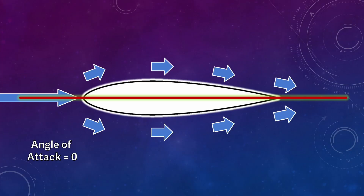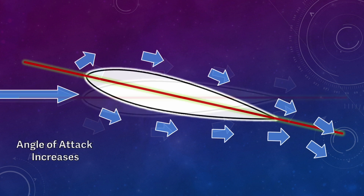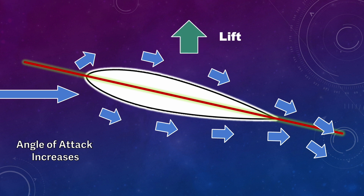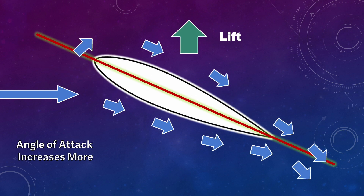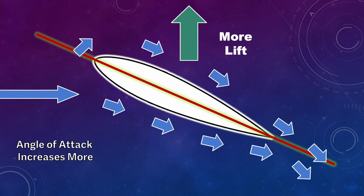If we start to increase the angle of attack, we'll start to see a difference in the way air flows over the top of the wing compared to the bottom, and that difference is what allows the wing to create lift. This wing has to have some positive angle of attack in order to create lift. As we increase the angle of attack even more, we'll see the wing create more and more lift. In general, increasing angle of attack increases lift up to a certain point, which we'll talk about in a minute.